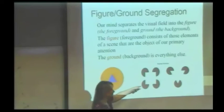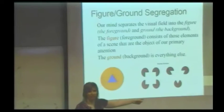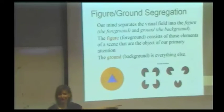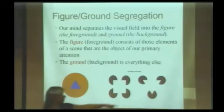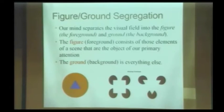What do you see here? A square over circles. Which is the figure? The square. Which is the background? The circles. And for this one? The triangle and a circle. You guys got it — you're so brilliant. This makes another great exam question, by the way.